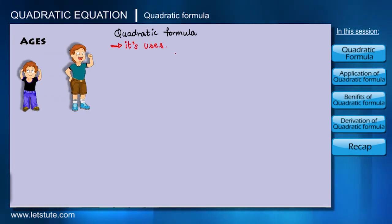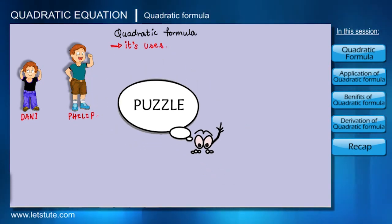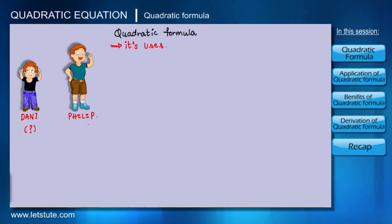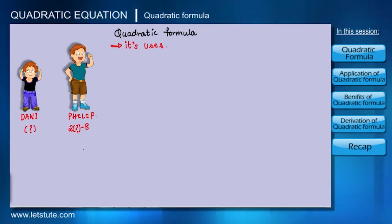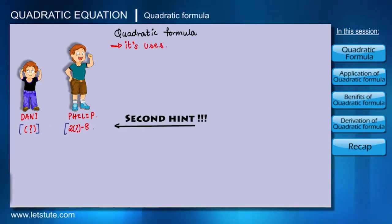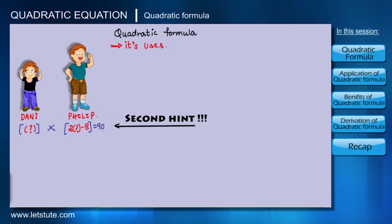Once I wanted to know the ages of two young genius kids — two brothers, Danny and Philip. They wanted me to solve a puzzle first. Danny did not tell me his age, but Philip told me that his age is eight years less than twice the age of Danny. I said it was not enough to find their ages, so they gave me a second hint.